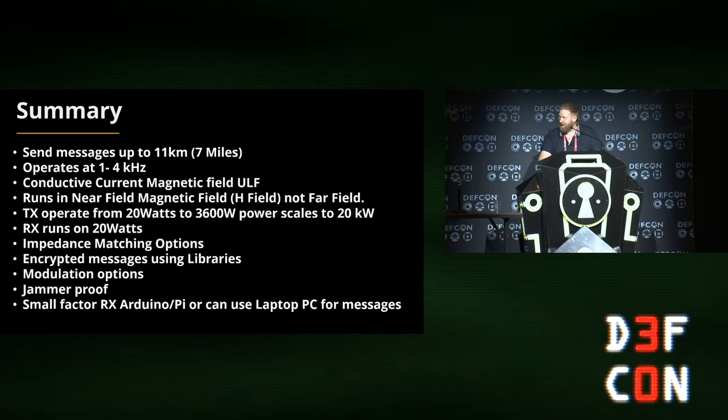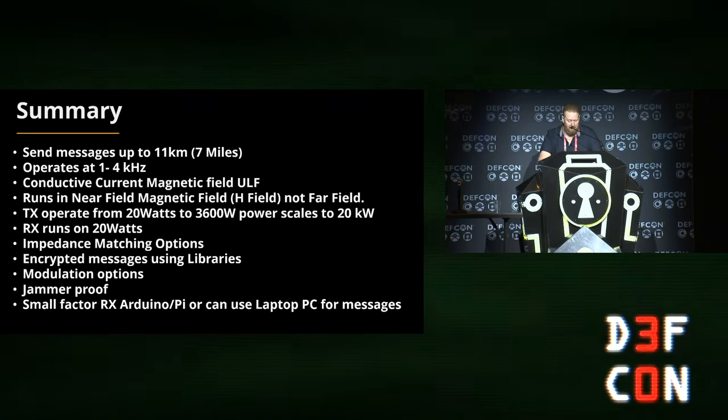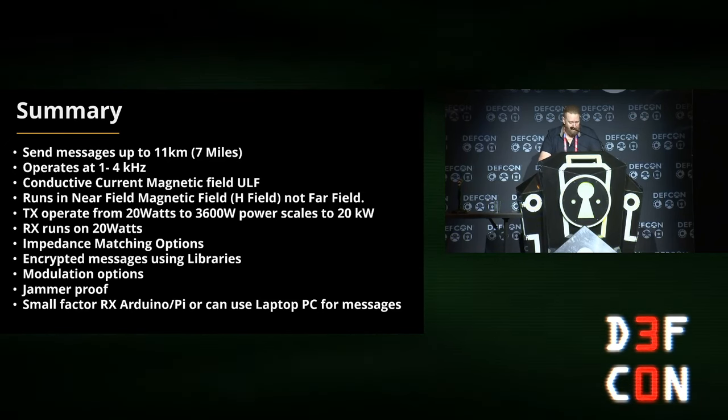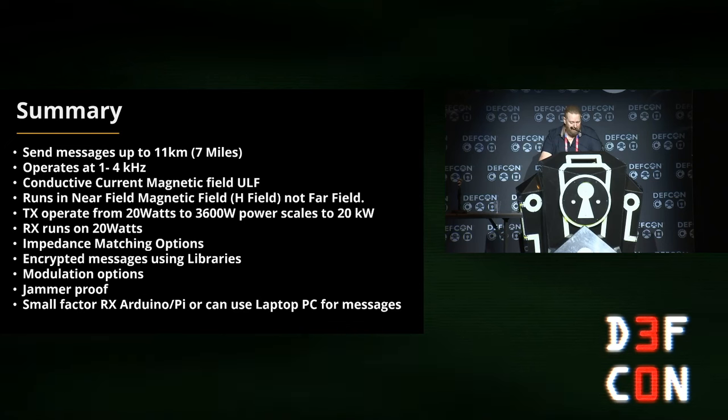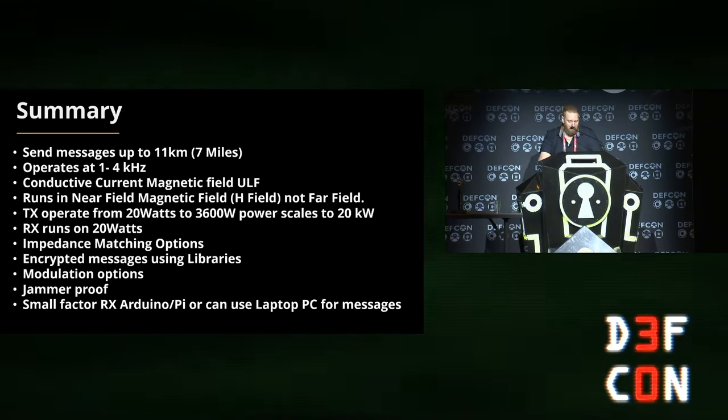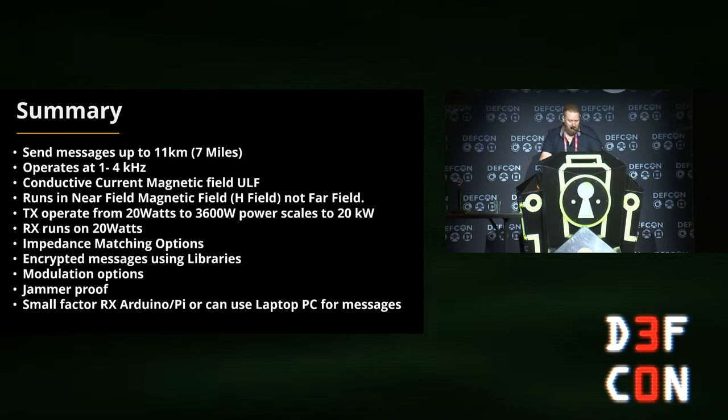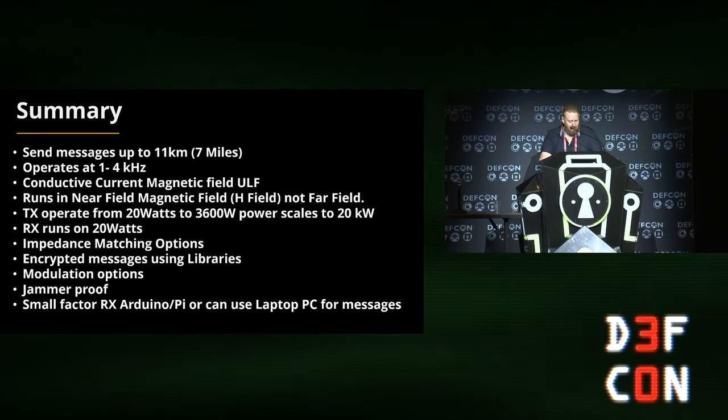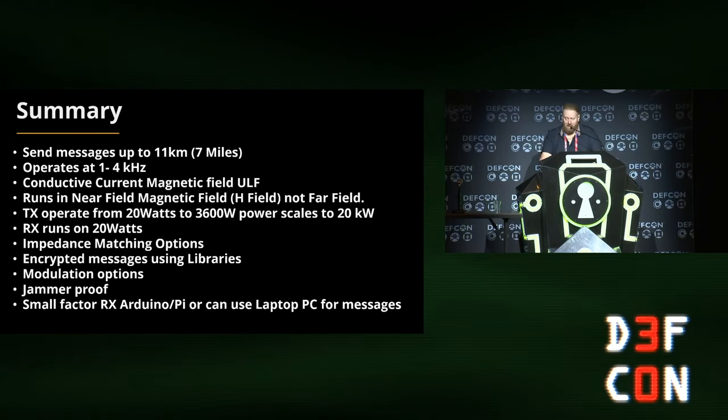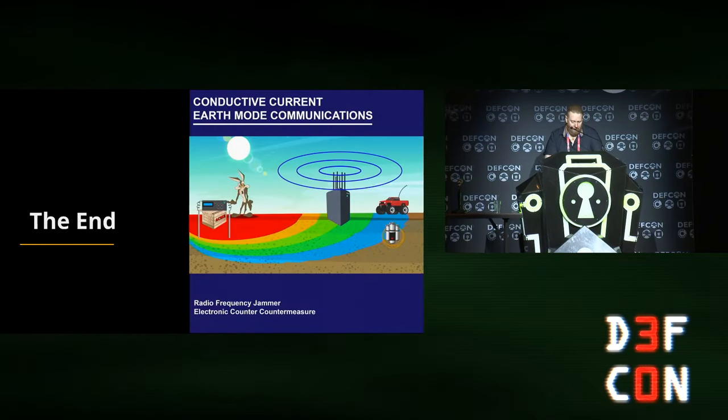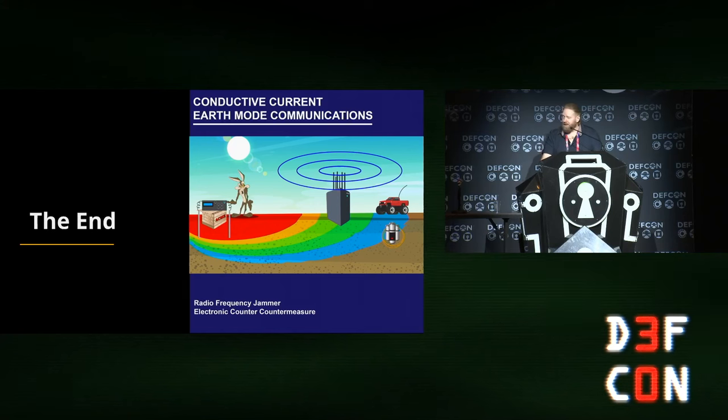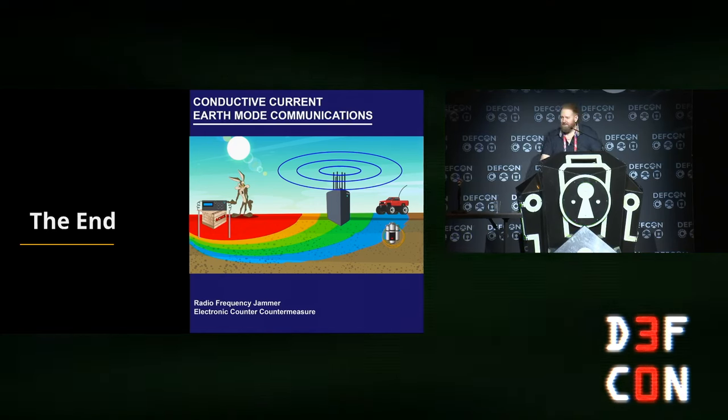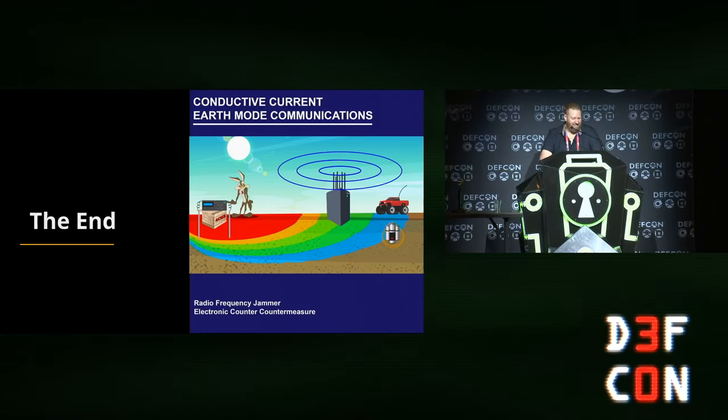Just to summarize, the device will communicate up to 7 miles in length, it operates at 1 to 4 kilohertz. Conductive current magnetic field, ULF, in near field, not far field. Jammer's work in far field. Configurable from 20 watts to 3600 watts and scale up to 20 kilowatt. For RX only runs on 20 watts. Impedance matching for different soil types, whether it be dry, sand or wet soil. Encrypted message, we've got modulation options, and as I said, jammer through. That's the end of the talk. If you want any further details on the tech, you can have a look at the paper on the media server. Thank you very much.